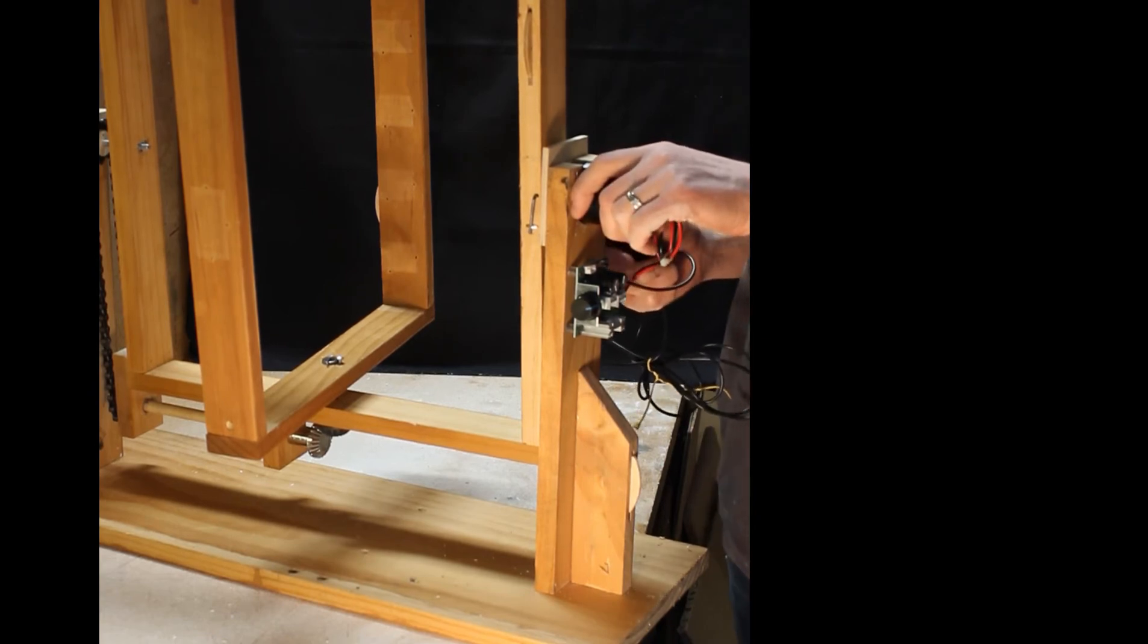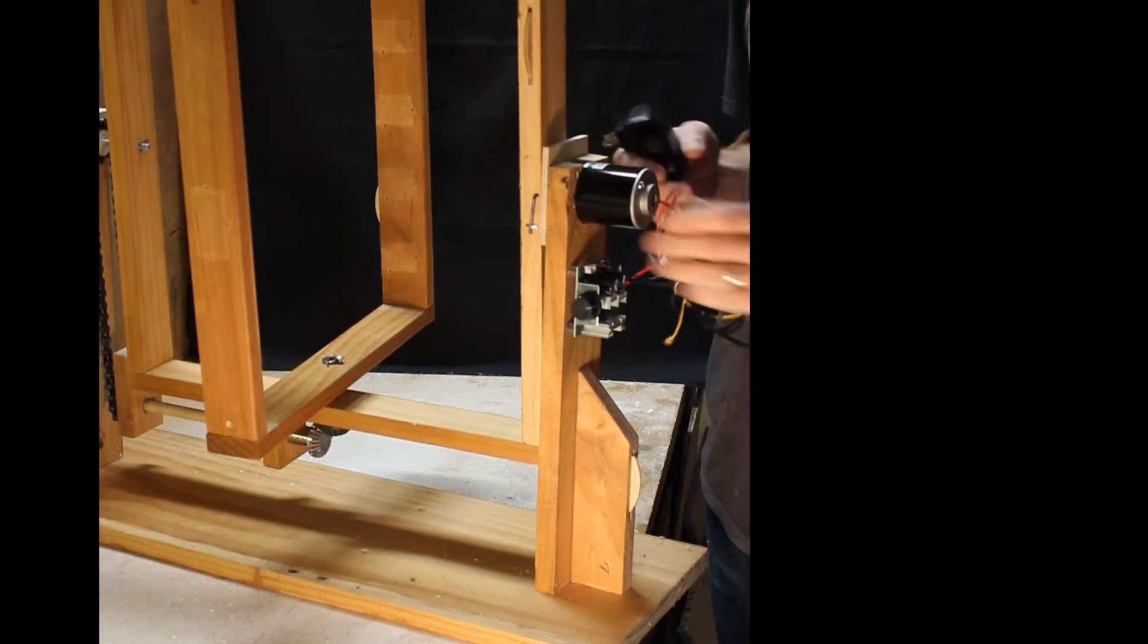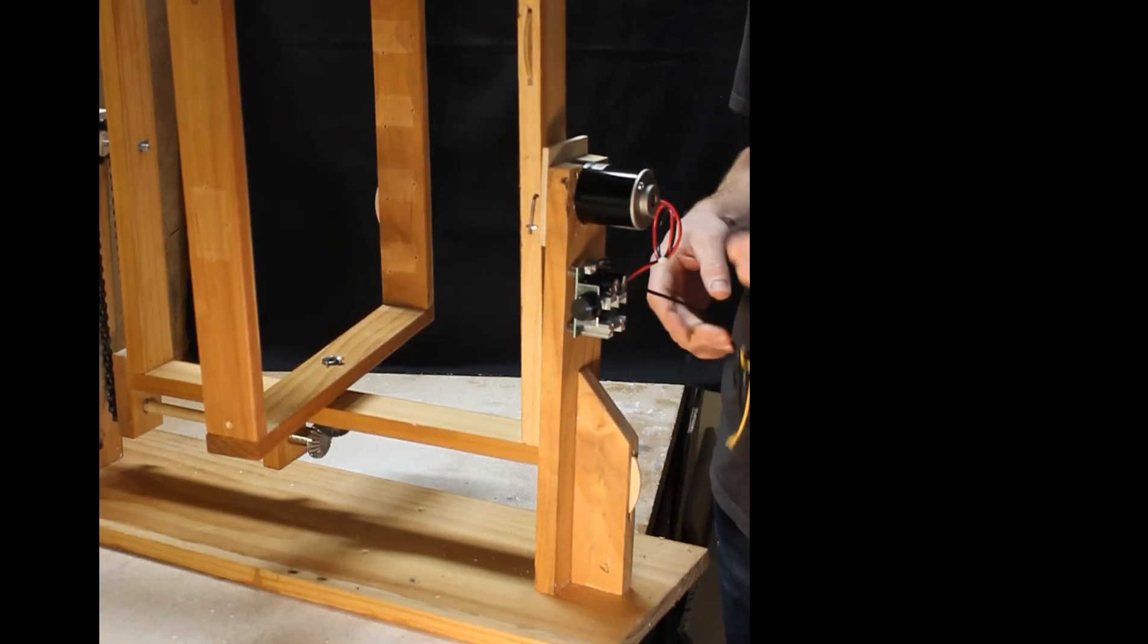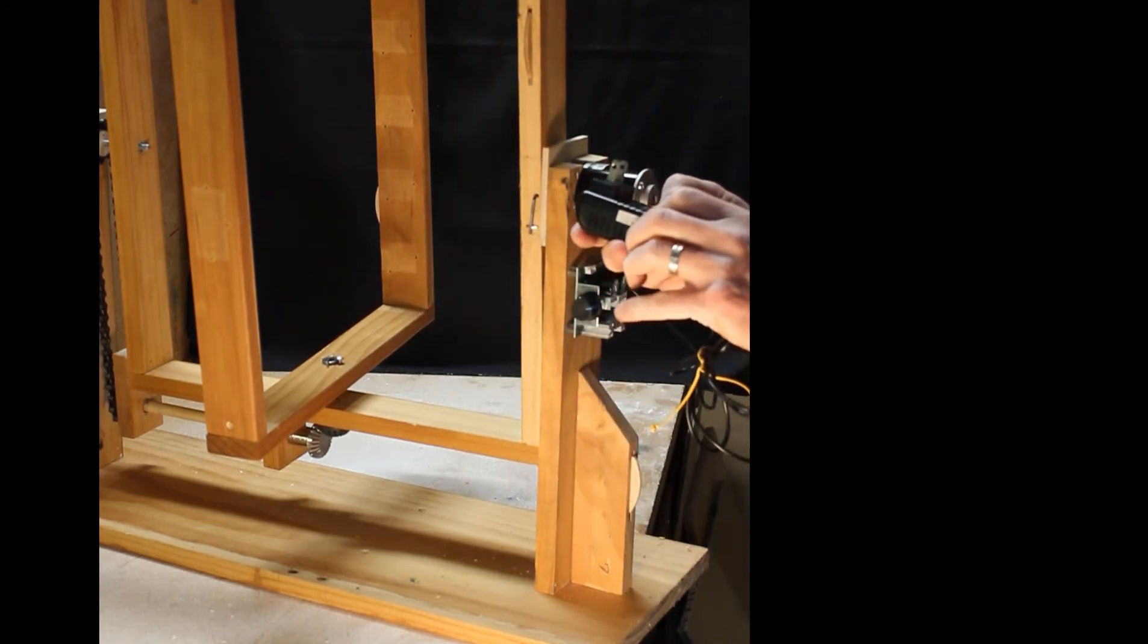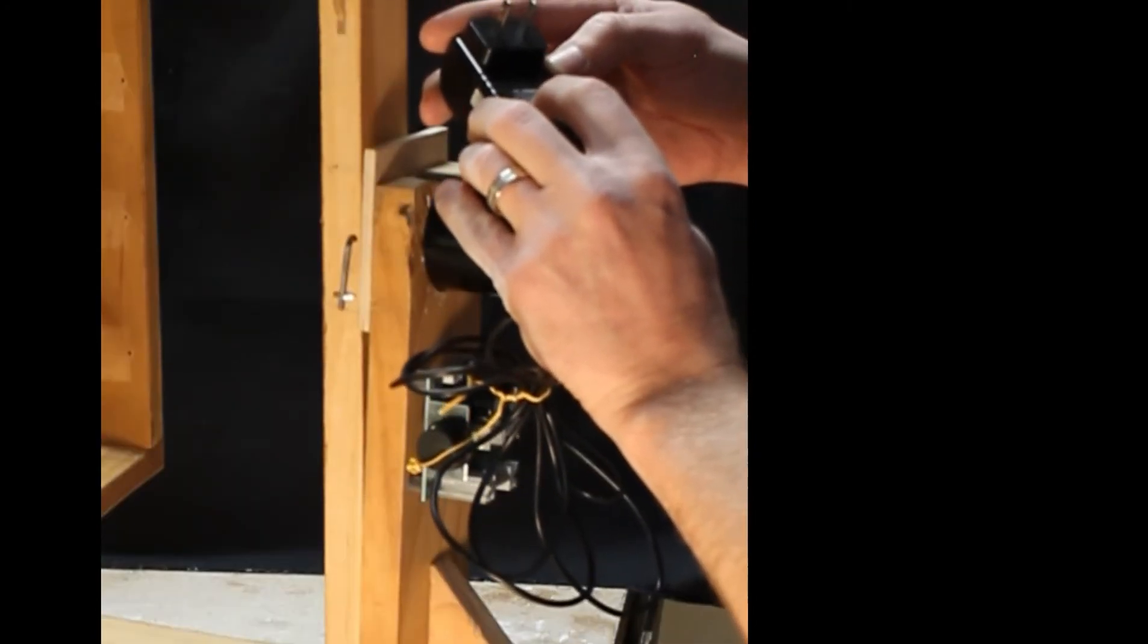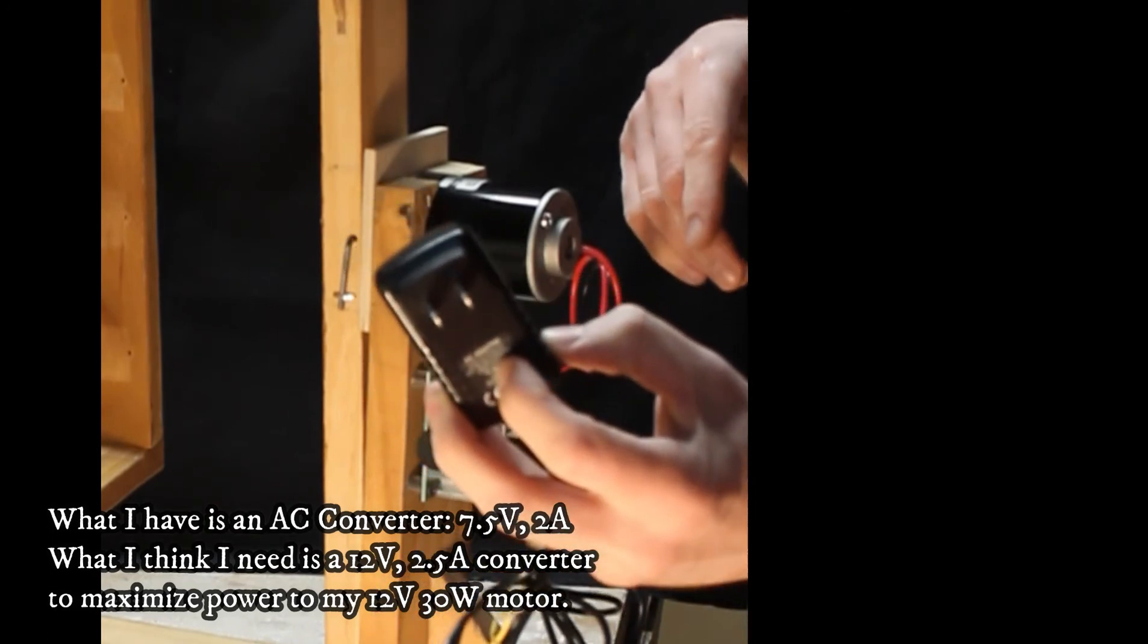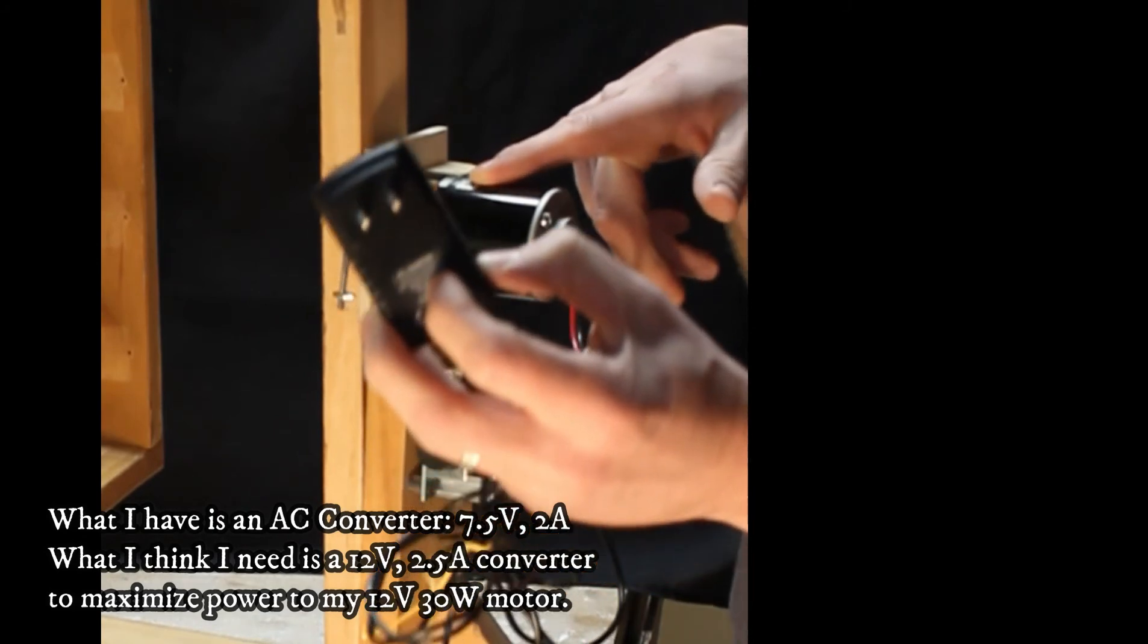And so I ran direct current into this direct current motor. Don't do that. You need an AC, an alternate current converter. Anyway, before I get there, so I took an AC adapter. And I hooked it up. And this converts it as I plug it in. But this is not enough power. I don't know if this can even be seen here. But this says that it is a, the output is a 7.5 volt and a 2 amp. Well, this is a DC 12 volt motor. And I think it's a 30 watt.